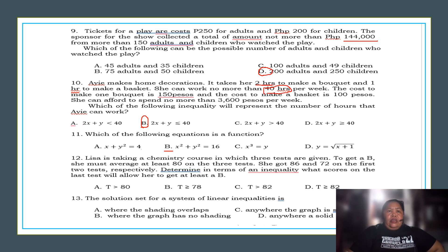Number 12. Lisa is taking a chemistry course in which three tests are given. To get at least a B, she must average at least 80 on three tests. She got 86 and 72 on the first two tests, respectively. Determine in terms of an inequality what score on last test will allow her to get at least a B. T is greater than 80, greater than or equal to 78, greater than 82, or the score is greater than or equal to 82? So, of course, the score must be greater than or equal to 82 to get at least B, which is about 80.